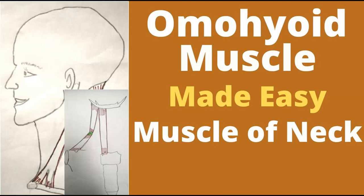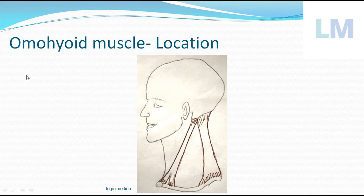Hello everyone, welcome to my YouTube channel Logic Medico. Today's interesting topic is the omohyoid muscle. Most students forget to remember this omohyoid because of its name itself, so let's make it as simple as possible. Without much delay, let's start. The location of this muscle is obviously in the neck — the anterior part of the neck as well as the posterior part. In front of sternocleidomastoid is the anterior triangle, and behind the sternocleidomastoid is the posterior triangle.